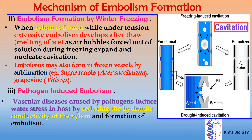The second way is embolism formation by winter freezing. When xylem is frozen while under tension, extensive embolism develops after thaw — that means melting of ice — as air bubbles forced out of solution during freezing expand and nucleate cavitation. Embolisms may also form in frozen vessels by sublimation, for example in sugar maple and grapevine. The third important way is pathogen-induced embolism.